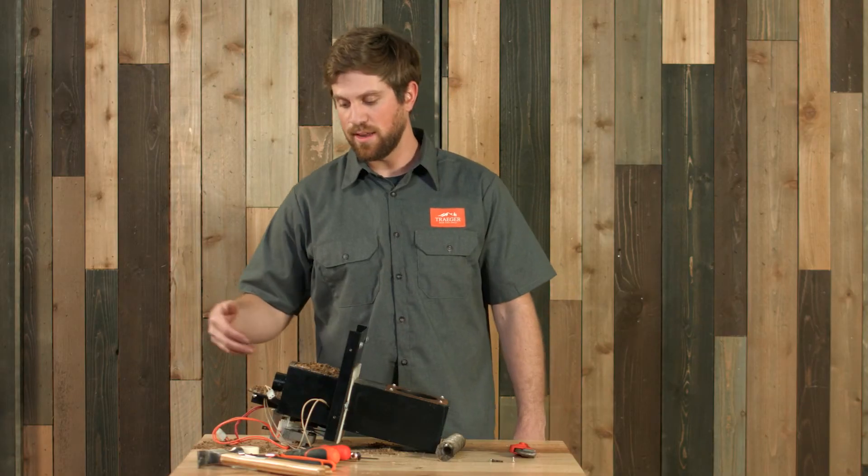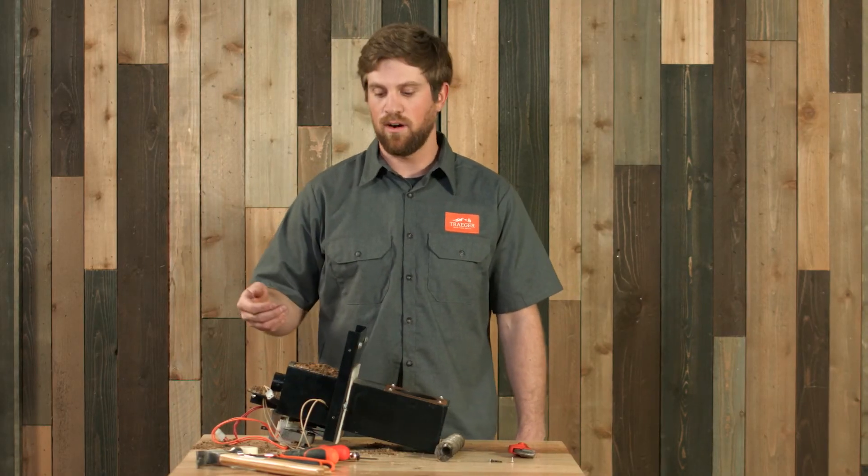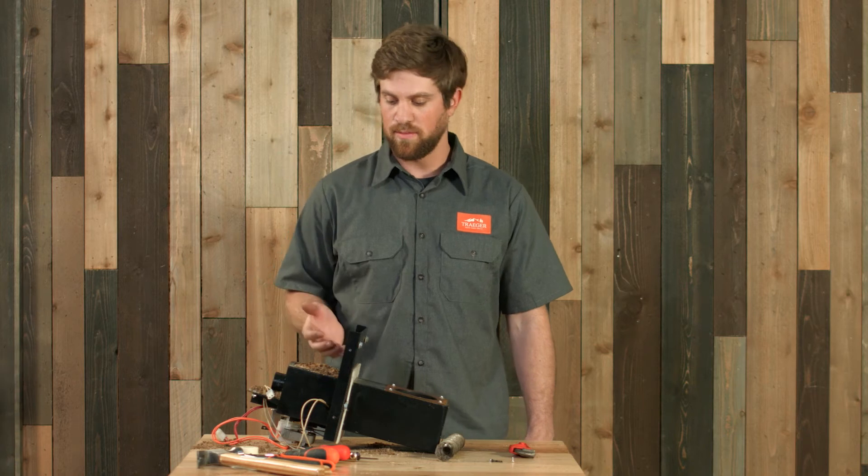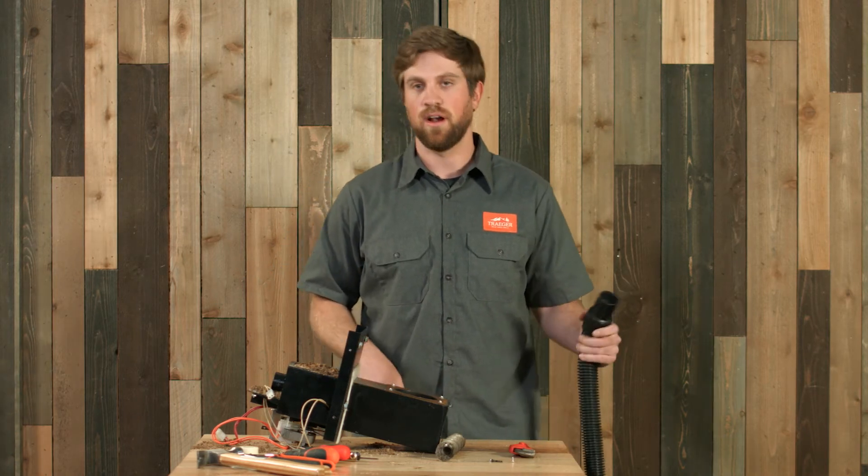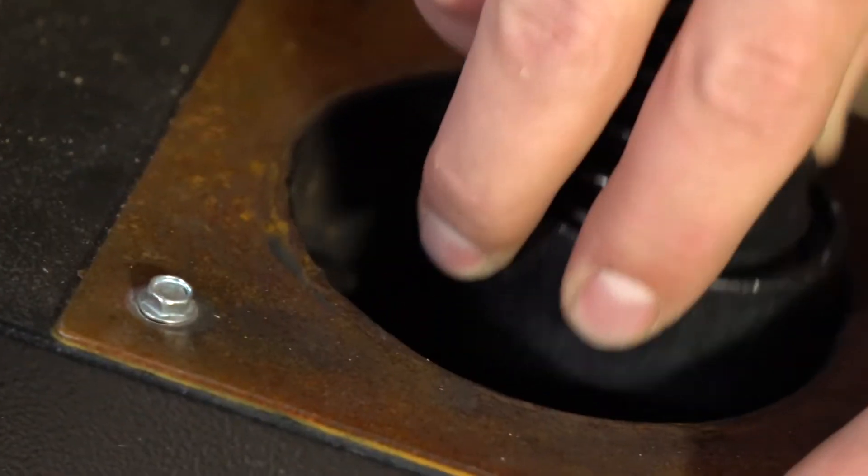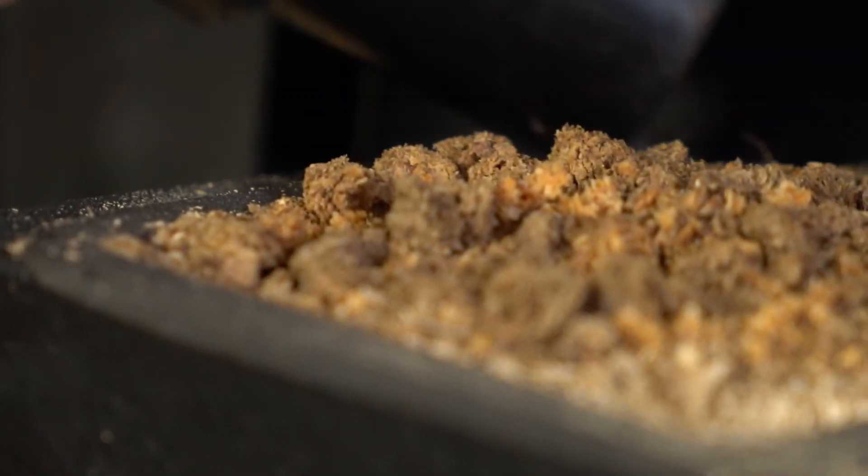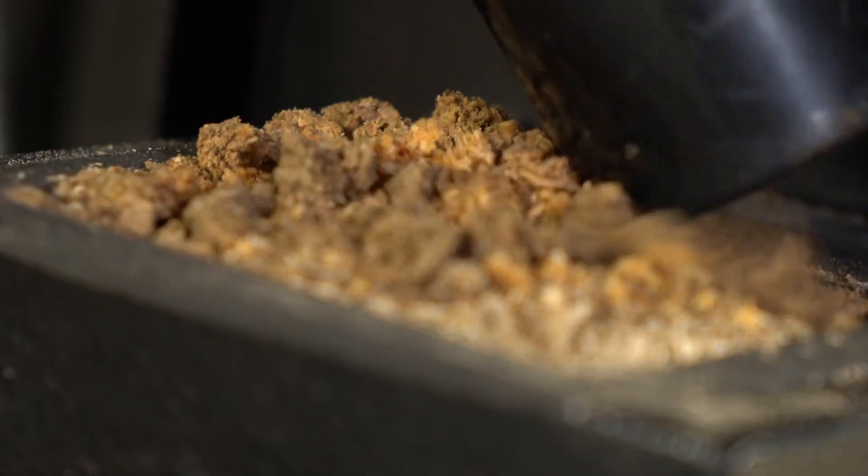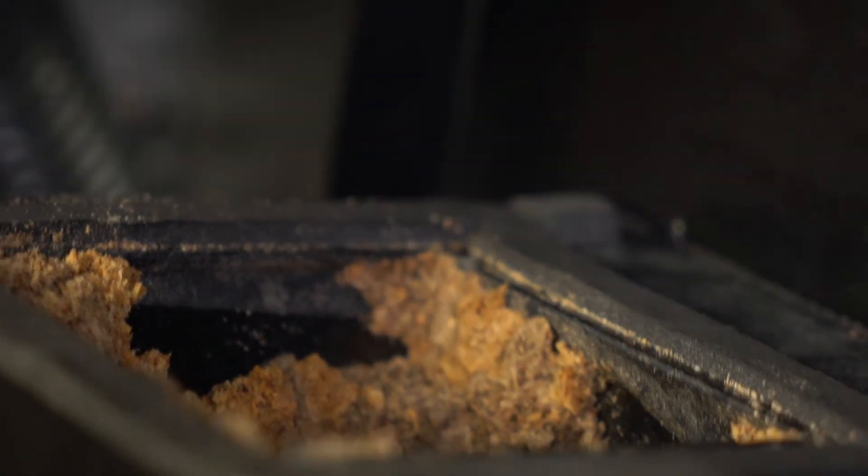Once everything's done and you've got the auger shaft cleaned out, we have a little bit of a mess to clear out. You're going to want to use a vacuum—a shop vac works really well. You want to focus on clearing out the fire pot of any excess pellets or objects as well as the top of the auger here and anything that may be inside of the auger shaft.